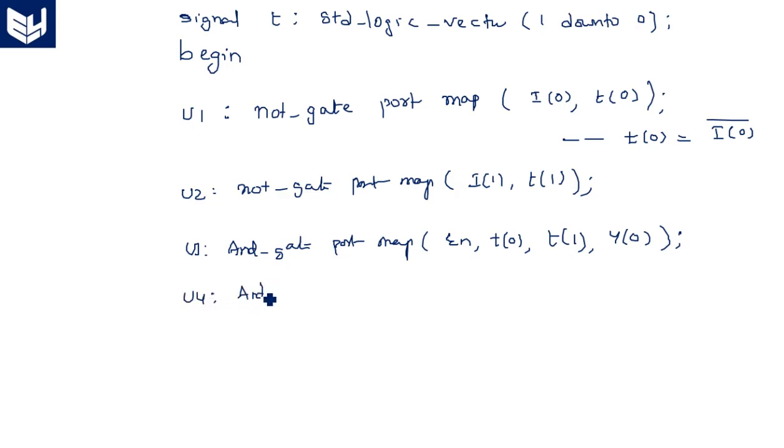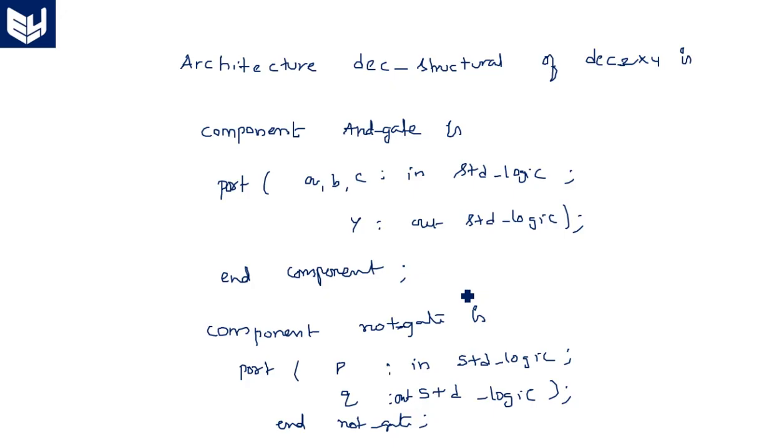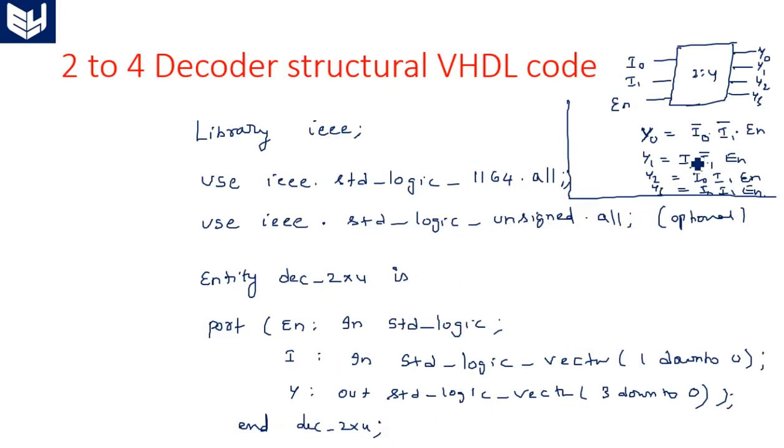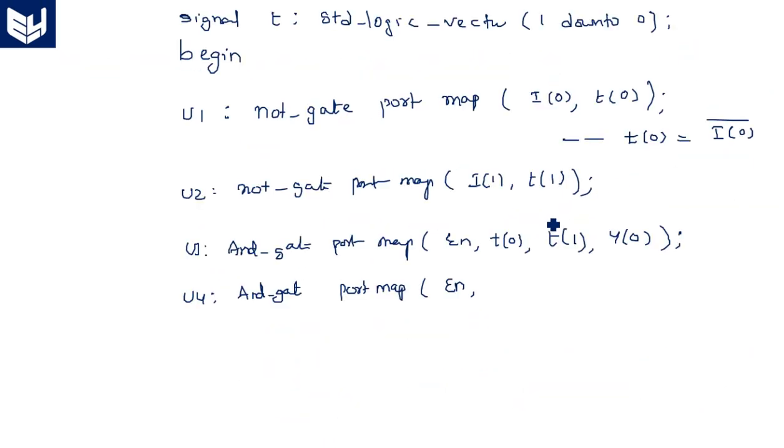Similarly, one more AND gate. AND_gate port map of enable. We have I0 directly, it is not I0 bar. If it is I0 bar, then we have to go for T0. As it is I0 directly, we can take I0 and it is T1 and enable. I0, T1 because it is I1 bar, and Y of 1.